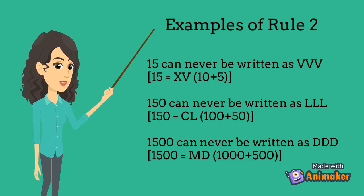150 can never be written as LLL. 150 equals CL, which is 100 plus 50. 1500 can never be written as DDD. 1500 equals MD, which is 1000 plus 500.